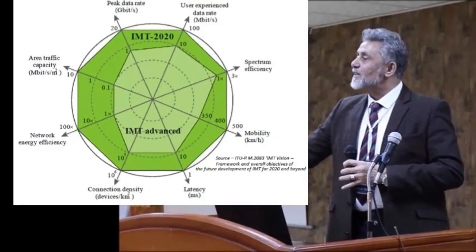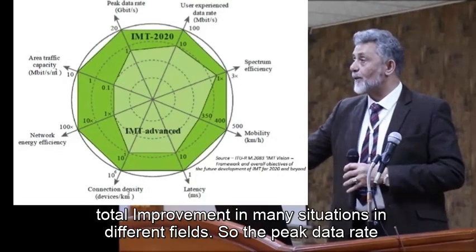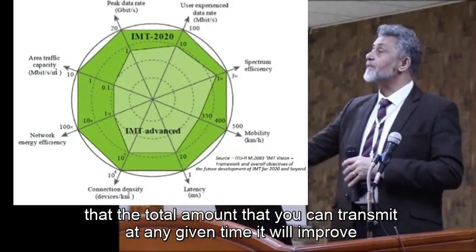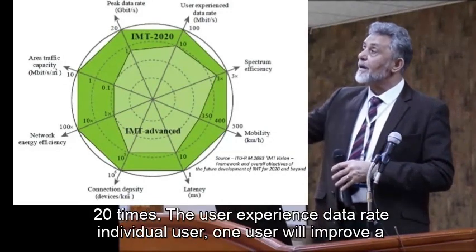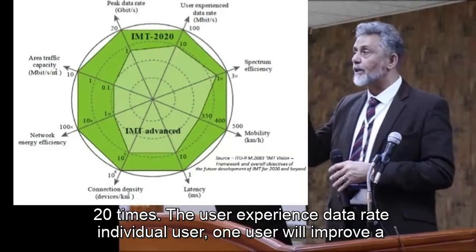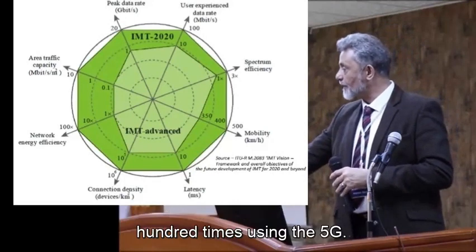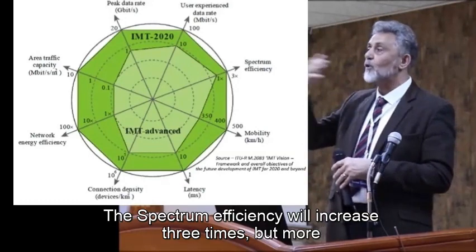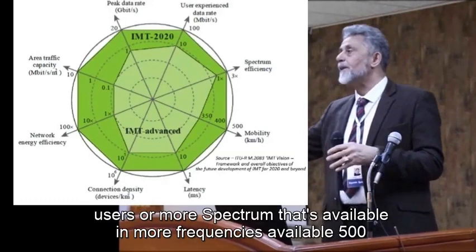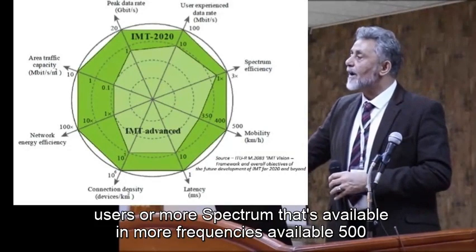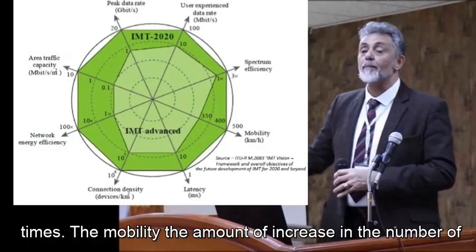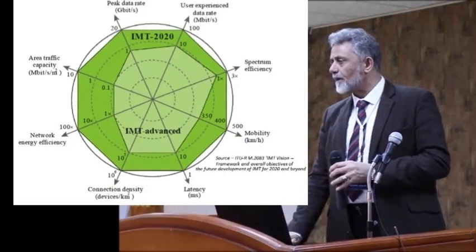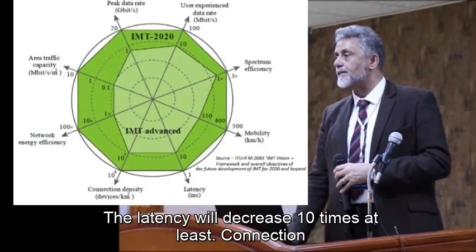This diagram shows the total improvements across many fields. The peak data rate — the total amount transmittable at any given time — will improve 20 times. The individual user experience data rate will improve 100 times with 5G. Spectrum efficiency will increase 3 times, and frequency availability will improve 500 times. The mobility — increase in mobile devices per square kilometer — and latency will decrease at least 10 times.